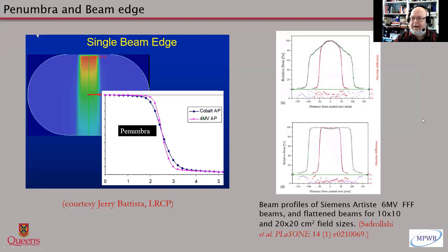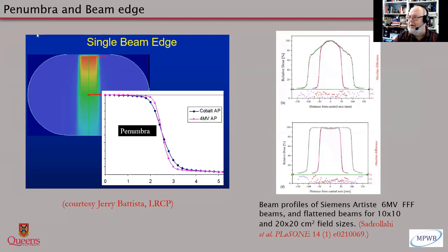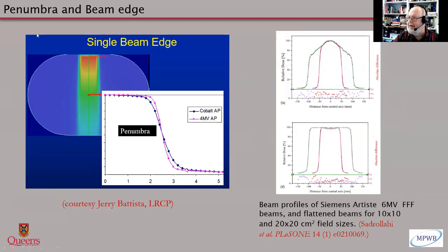Now let's talk about penumbra. Penumbra is another issue that always comes up, yet we have seen that the profile of the beam isn't as important as we thought, because these days we're actually treating with flattening-free photon beams, which I would loosely say are all penumbra — not because of the edge but because of the shape. I do not have a flat field, and yet we can do a lot of treatment with these flattening-free beams in VMAT, because if I give my treatment planning system the data from the beam I can account for the shape of the beam at the edge and correct for it during treatment planning.